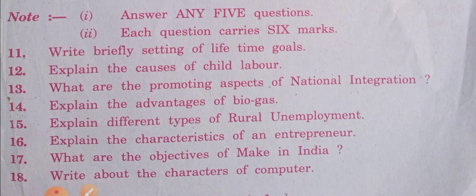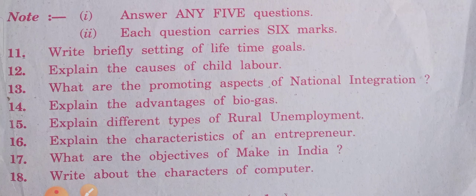Next is Section B questions. In Section B, you may have 3 choices. They will give 8 questions; out of 8, you have to attempt any 5. Each question carries 6 marks, so 6 into 5 is 30. Section A is 20 marks, Section B is 30 marks. Overall 50 marks. Pass marks: 18.